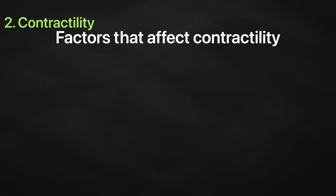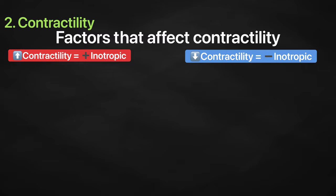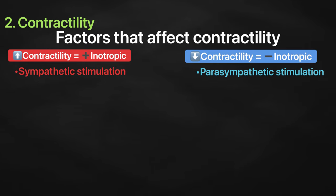Factors that increase contractility are described as positive inotropic factors and those that decrease contractility are described as negative inotropic factors. Not surprisingly, sympathetic stimulation is a positive inotrope whereas parasympathetic stimulation is a negative inotrope.